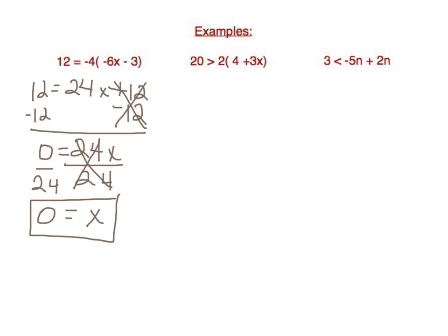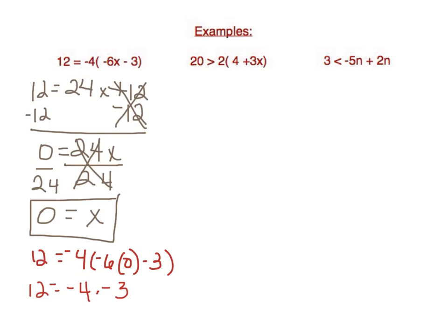It is always a good idea to check your work. Rewriting the original equation: 12 equals negative 4 times negative 6 times 0, minus 3. Negative 6 times 0 is 0, and 0 minus 3 is negative 3. So we have 12 equals negative 4 times negative 3. Since negative 4 times negative 3 equals 12, the left side equals the right side, confirming x equals 0 is correct.